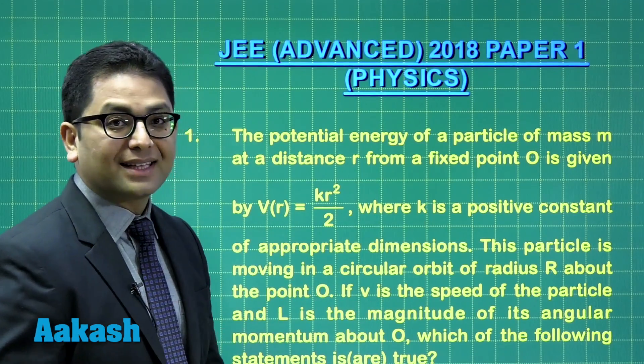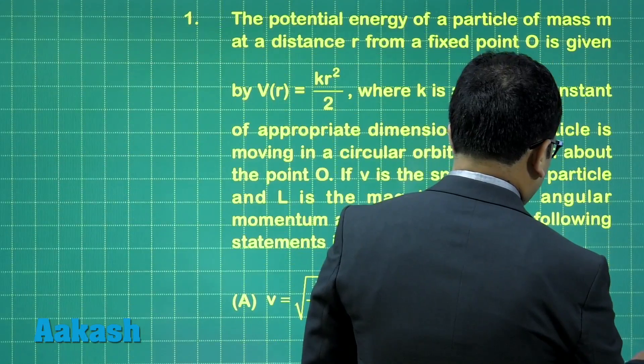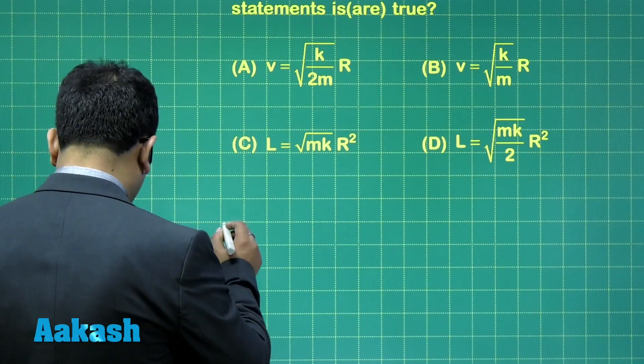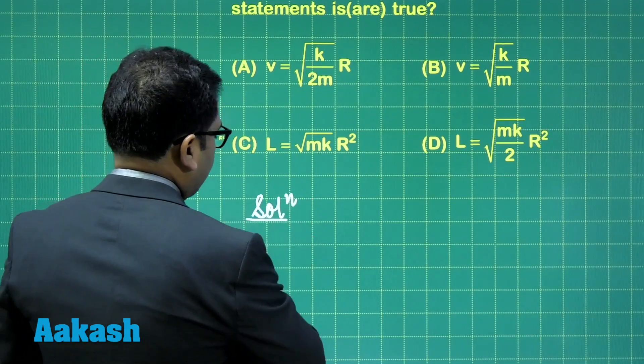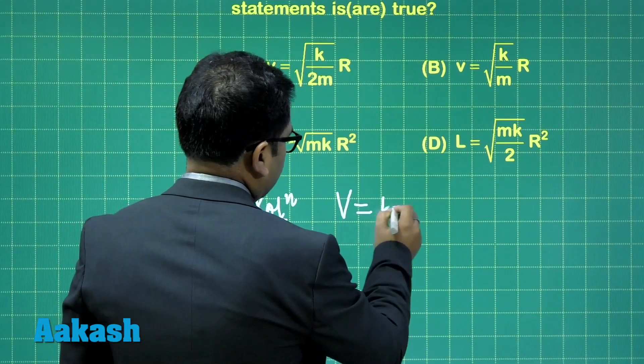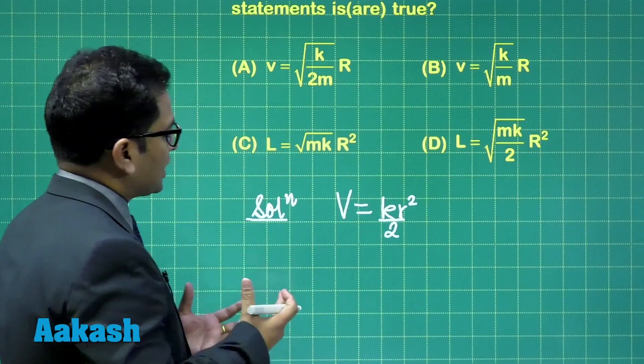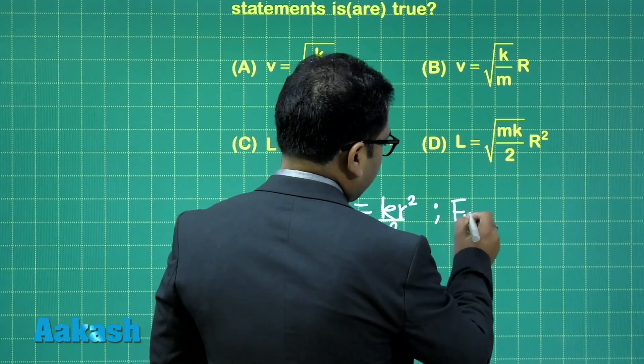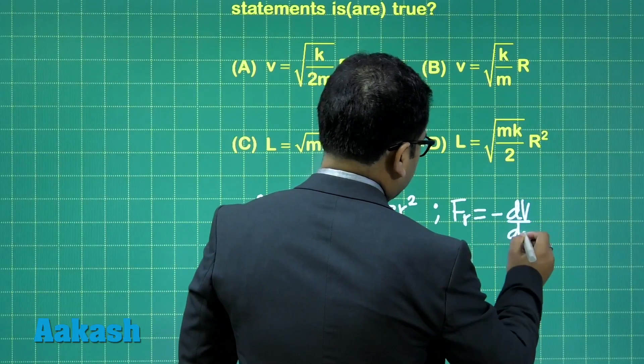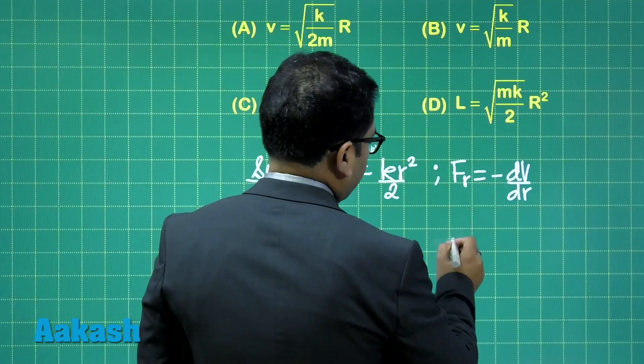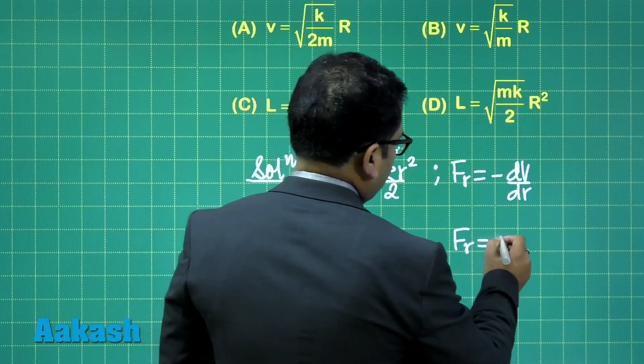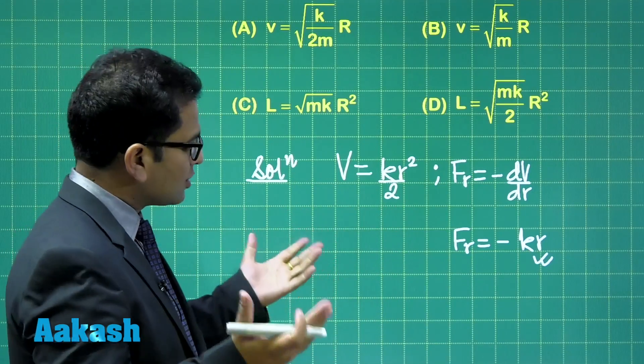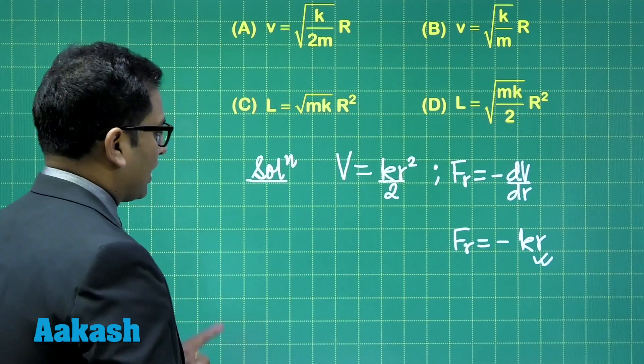We need to calculate the speed and the magnitude of the angular momentum. So here I have the potential energy, which is given as k r squared by 2. Let's try to go with the solution part. The potential energy is given as k r squared divided by 2. Since potential energy is only the function of r, it's not a function of theta, therefore the entire force would be in the radial direction, and that would be minus of dv by dr. That's a pure gradient equation. And this force now comes out to be equals to minus of k times r. The negative sign indicates that the force is in the decreasing direction of r, so quite obviously directed towards the center.